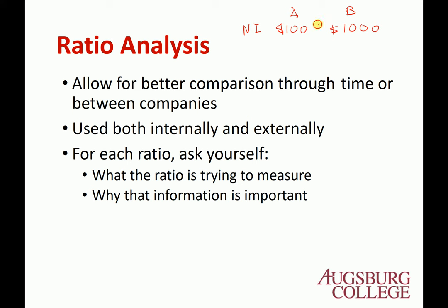Because the net income of B is greater than net income of A, it sounds like B is better. However, if Company A's total assets are $1,000 and Company B's total assets are $100,000, then if you normalize — net income divided by total assets — that's 10% for A and 1% for B.